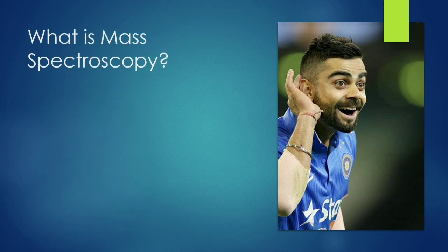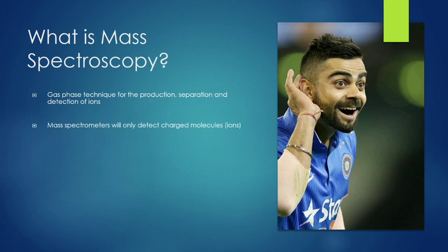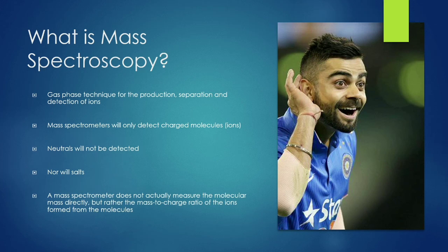If somebody is asking you what is mass spectroscopy, the definition is: it is a gas phase technique for the production, separation, and detection of ions. Mass spectrophotometers will only detect charged molecules or ions — neutrals will not be detected, nor will it detect salts. A mass spectrophotometer does not actually measure the molecular mass directly, but rather the mass-to-charge ratio of the ions formed from the molecules.